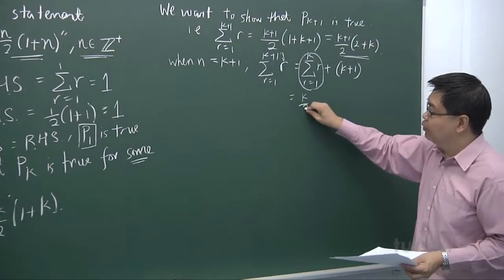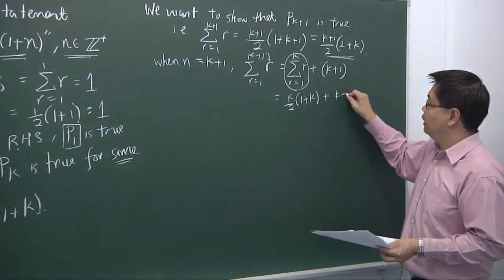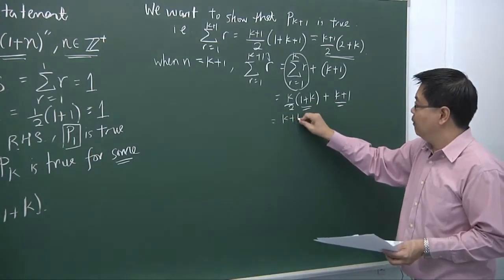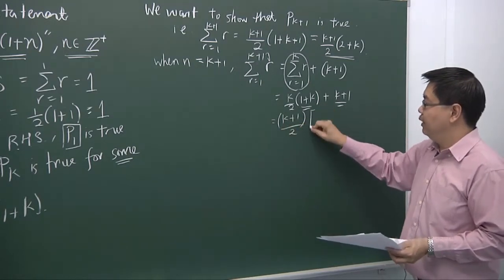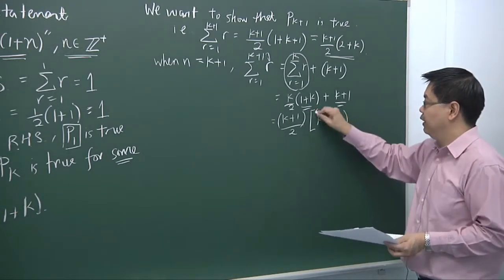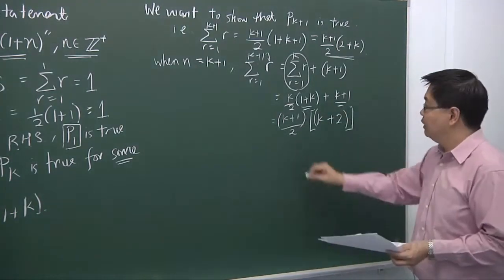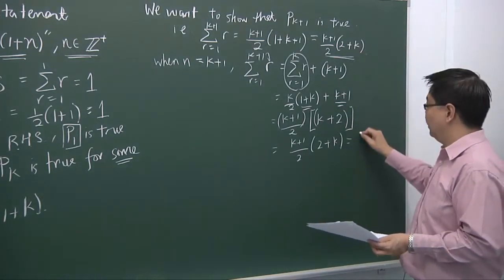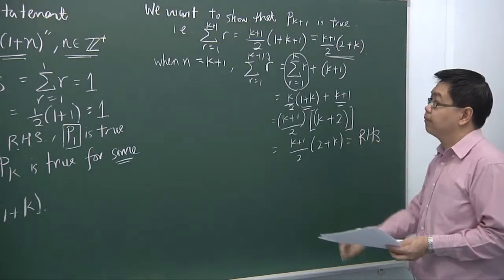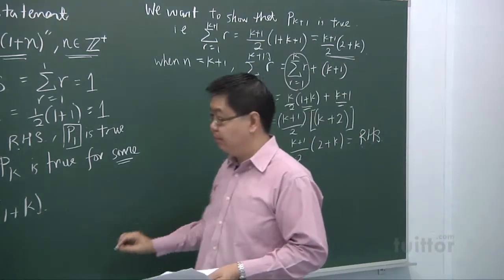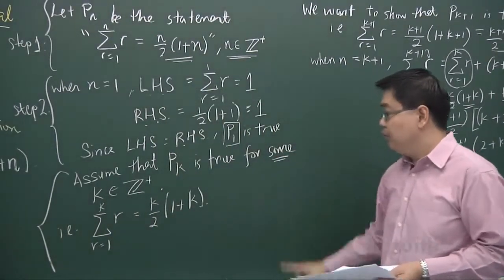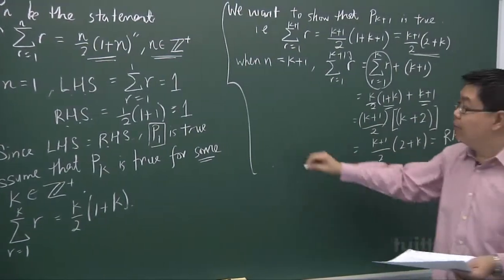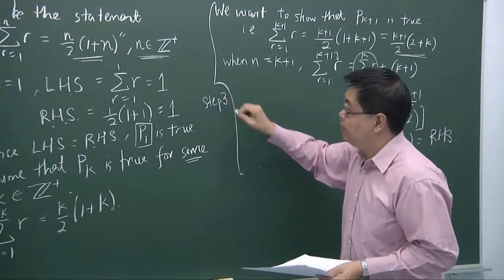We get k over 2 times (1 plus k) plus (k+1). They share a common factor, so we take out (k+1) and one half, leaving (k plus 2). After simplification we get (k+1) over 2 times (2 plus k), which is exactly the right-hand side we wanted to show. This entire body — from assuming P(k) is true all the way to proving P(k+1) is true — constitutes step 3 of our induction.